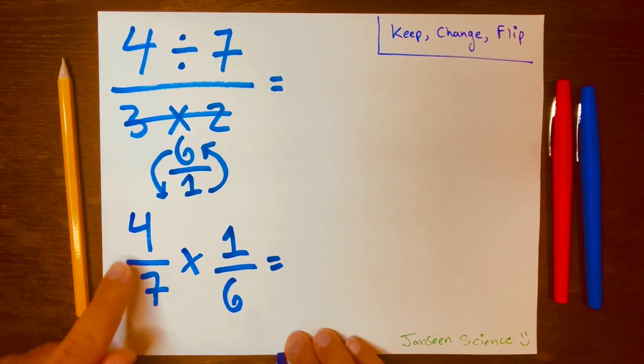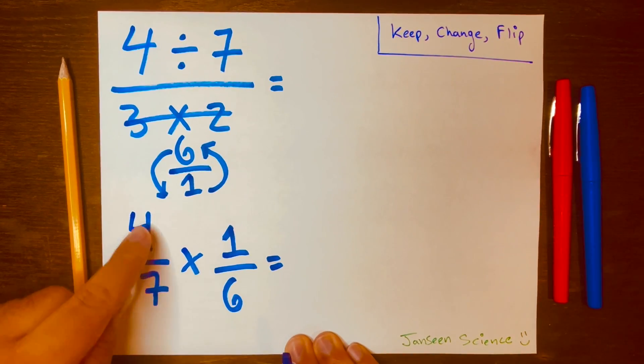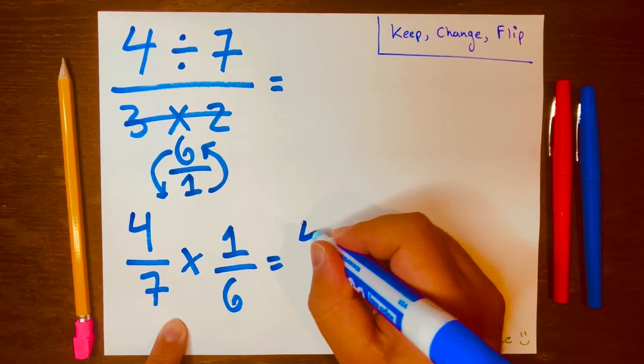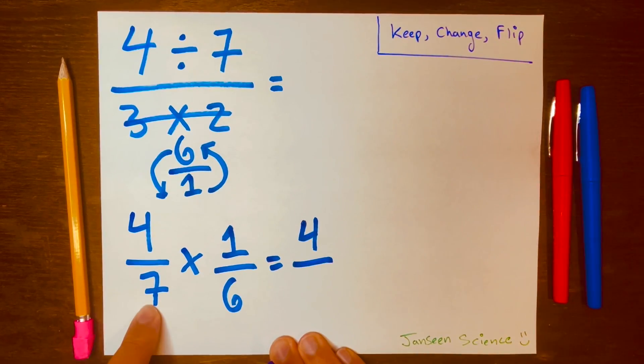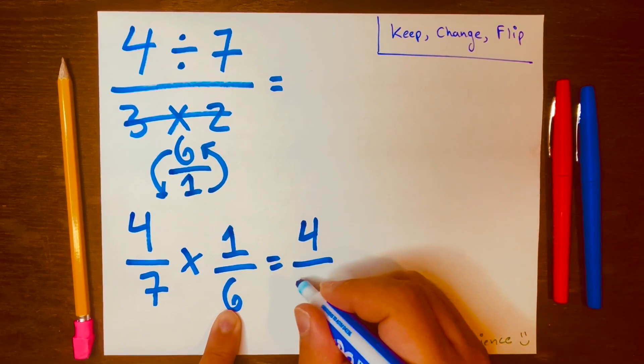And then we just multiply across. 4 times 1 is 4. 7 times 6 is 42.